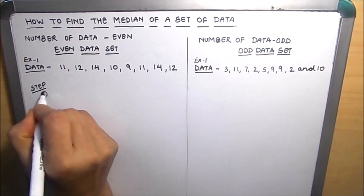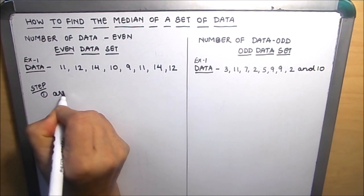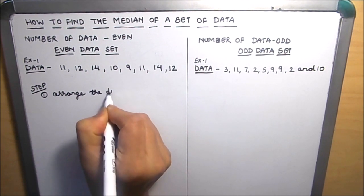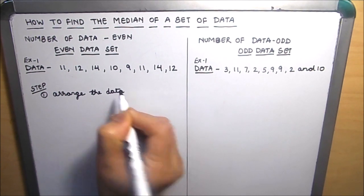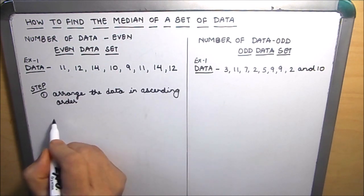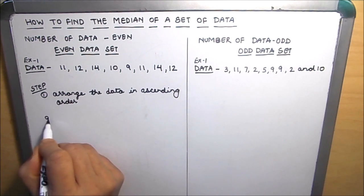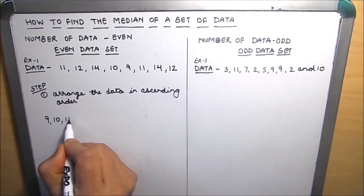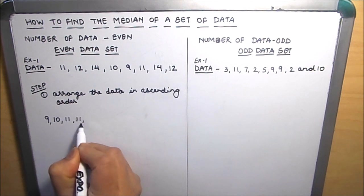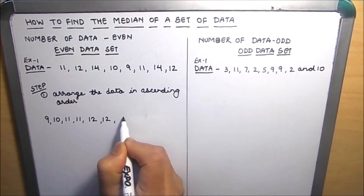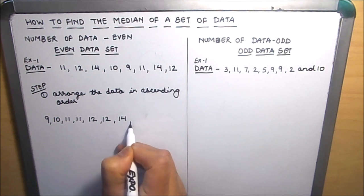We will arrange the data in ascending order. So here we will arrange these terms in ascending order: the lowest term is 9, then 10, then 11, 11, 12, 12, and 14 and 14.